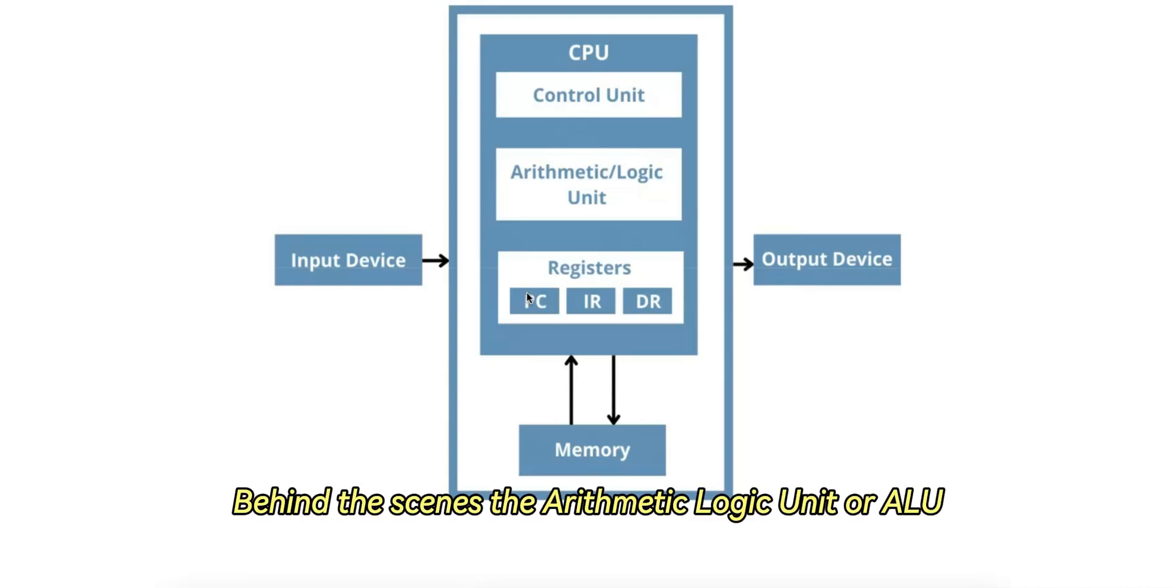Behind the scenes, the Arithmetic Logic Unit, or ALU, takes the values from R2 and R3 already loaded in the registers and performs the addition operation. The result is written back into R1.